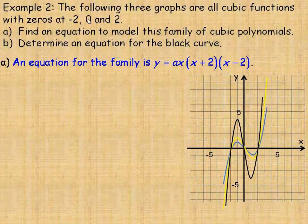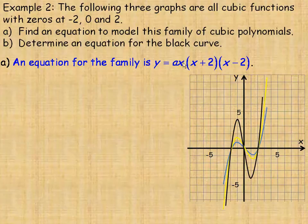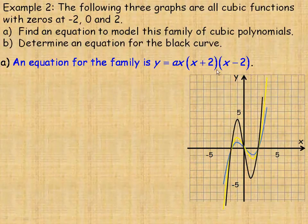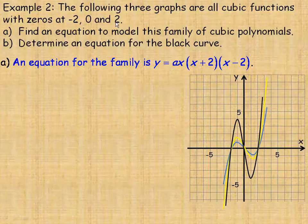X is one of the factors because 0 is a zero for this particular polynomial. Remember, it always goes x minus the particular zero, so x minus 0 is just x. Since negative 2 is a zero or a root for this particular cubic, x minus negative 2 is going to be the x plus 2 factor. Since positive 2 is another zero, x minus 2 is the third and final factor. That's an equation for any one of the cubic functions in this family.